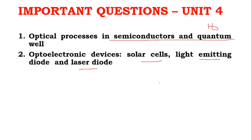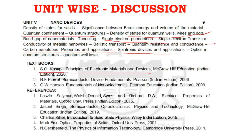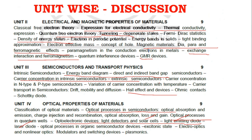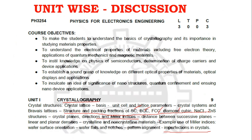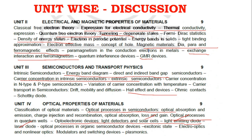In this subject, since the syllabus is vast, you get a lot of topics. Unit 1 has about 3 questions to focus on. Unit 2 has many questions covering quantum interference, paramagnetism in conduction electrons, Fermi-Dirac statistics, and classical free electron theory — a lot of important concepts.